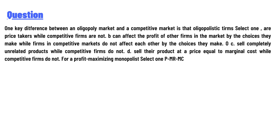Select one: A) price takers, while competitive firms are not; B) can affect the profit of other firms in the market by the choices they make, while firms in competitive markets do not affect each other; C) sell completely unrelated products compared to competitive firms; or D) do not sell their product at a price equal to marginal cost, while competitive firms do not, for profit maximizing.